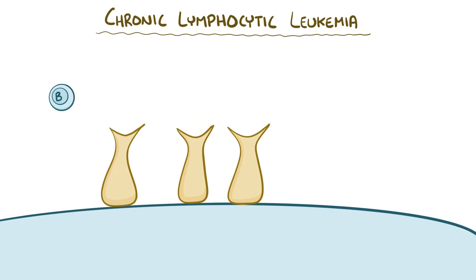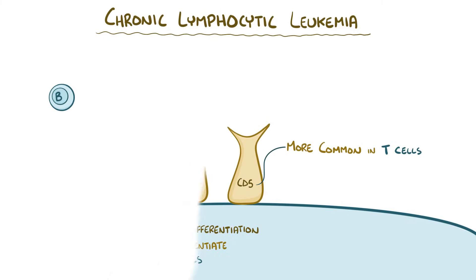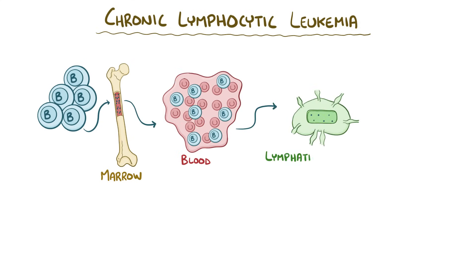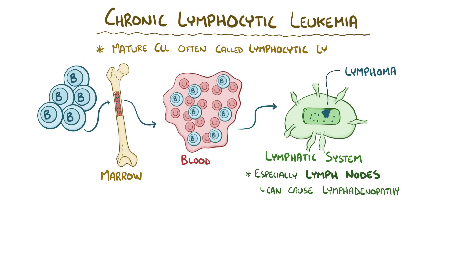These premature cells always express particular proteins on their surfaces, including CD5, CD19, and CD23. The CD part stands for cluster of differentiation, because these are common surface proteins which can be used to differentiate between the lymphocytes. And despite CLL cells being B lymphocytes, they express the CD5 protein, which is a lot more common in T lymphocytes. These premature leukocytes build up in the bone marrow and eventually spill into the blood, like in CML. Some of these cells then move to the lymphatic system, and although this does include the spleen, the lymph nodes are typically prioritized. This causes swelling of the lymph nodes, or lymphadenopathy. Then eventually, B cells in these nodes will accumulate into distinct masses, or lymphomas, which is why mature CLL is sometimes called small lymphocytic lymphoma.